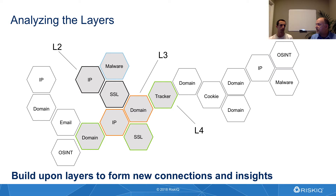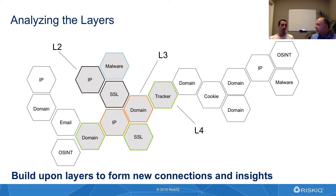If we're using the signals that are available to us at layer two, we might have a hard-coded IP address and an SSL certificate that are part of the malware. And at layer three, that SSL certificate that was hard-coded in the malware might have a domain associated with it.